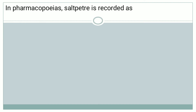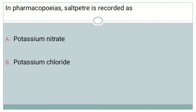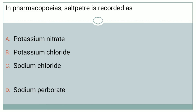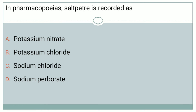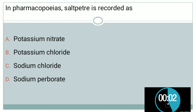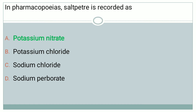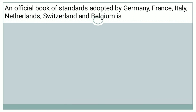The next question: In Pharmacopeia, Salt Petri is recorded as — Option A: Potassium Nitrate, Option B: Potassium Chloride, Option C: Sodium Chloride, Option D: Sodium Perborate. The right answer is Option A, that is Potassium Nitrate.